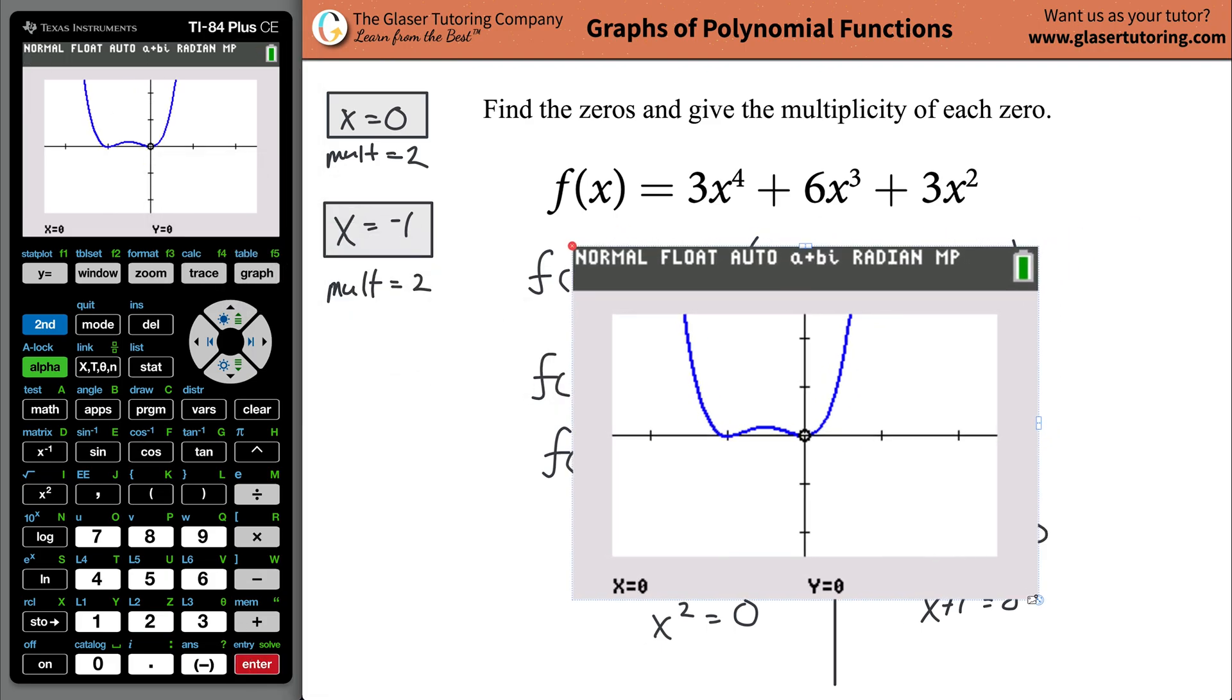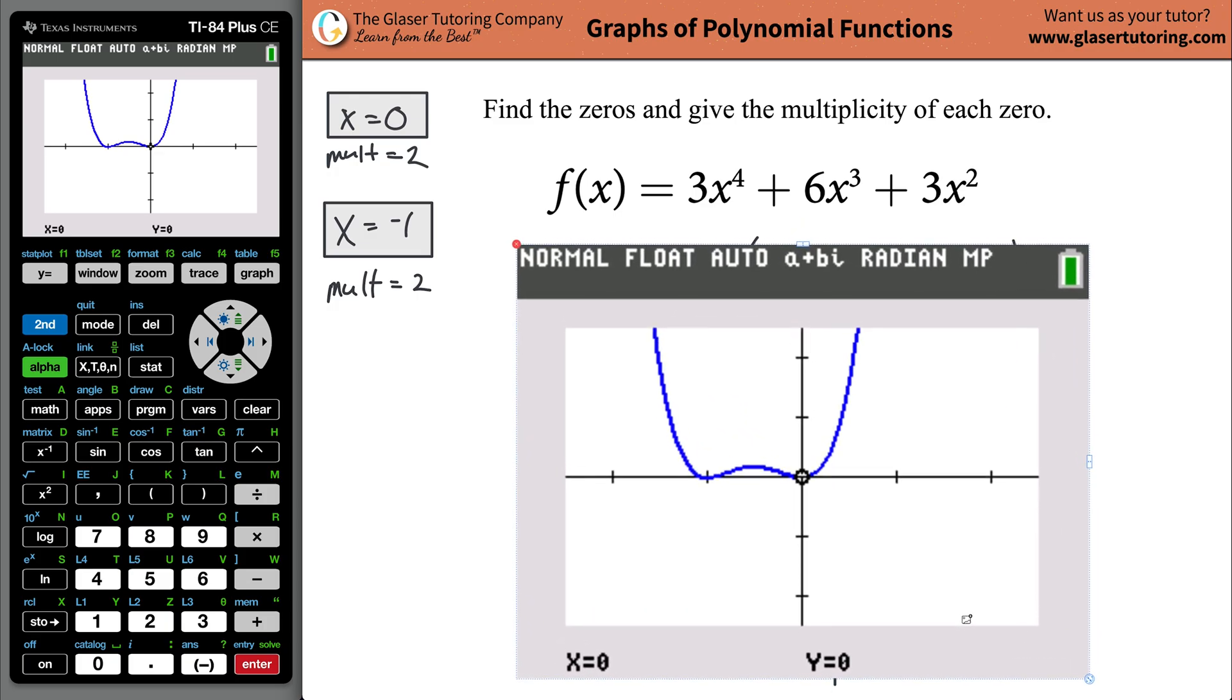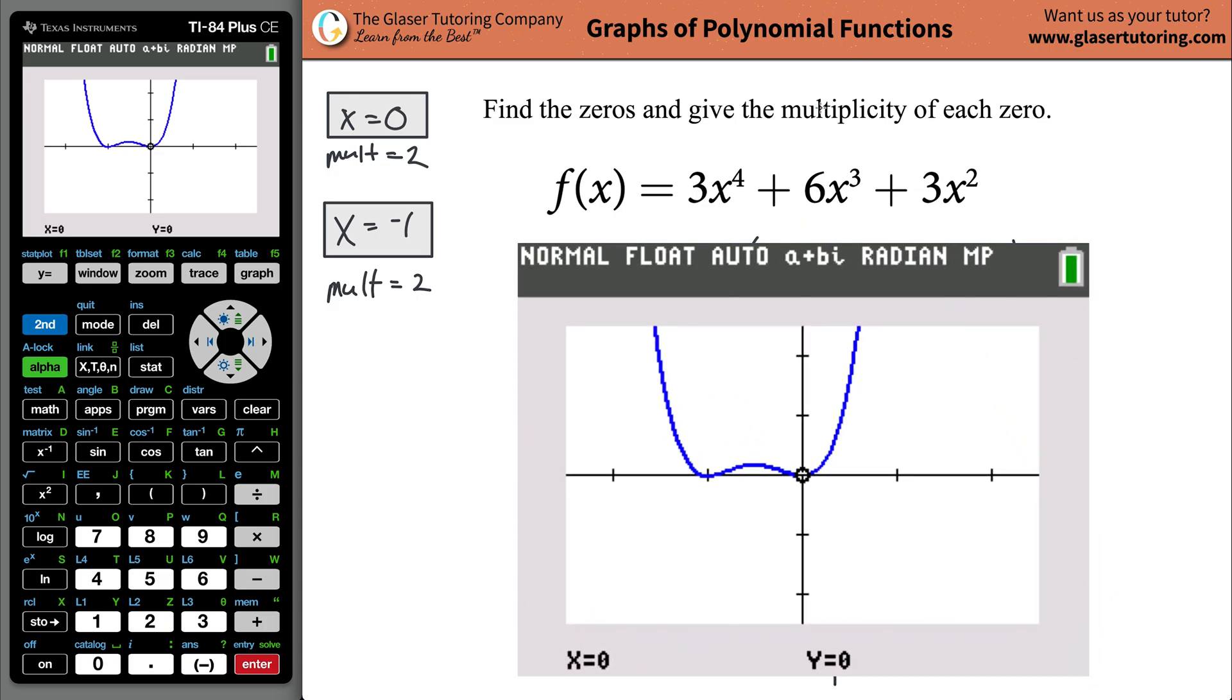And as you can see now, we have two locations where the function touches the x-axis. We have a value right here. Now, that looks very close, if not exactly, at negative 1. That's what we said it should be. And we also have another value right here at x is equal to zero, and that's what we said it should be. And now notice how both curves here basically just touch that x-axis and bounce. They come down. They don't cross the x-axis. They touch it, but they just bounce.